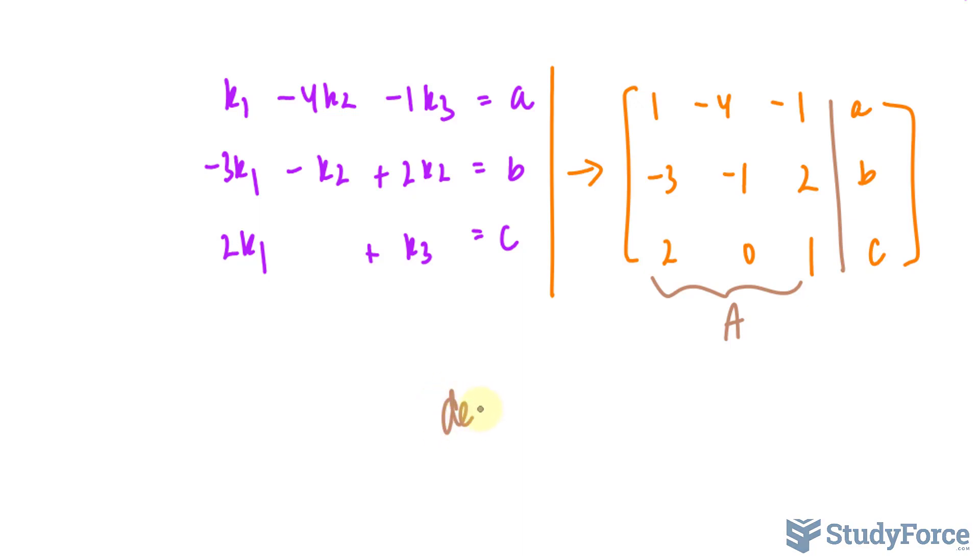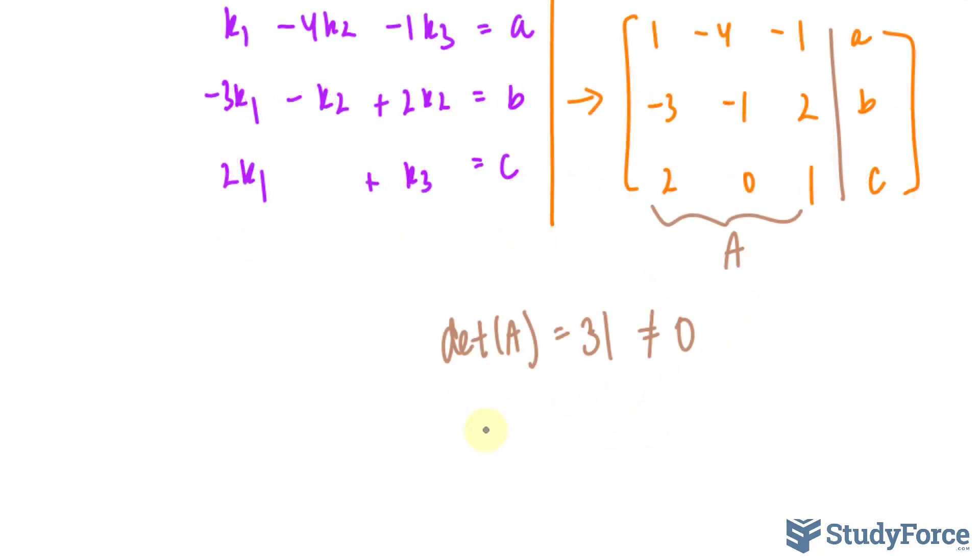So by finding the determinant of A, you should end up with, for this specific matrix, 31. That does not equal 0, so A is invertible, and it has solutions. And if it has solutions, then it spans. So that's our first proof.